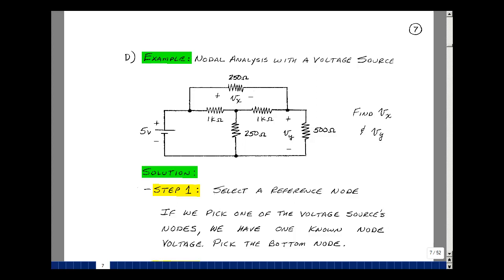This lesson deals with a nodal analysis example which has one voltage source. You can find these notes in the course ebook in Chapter 3, starting on page 7.